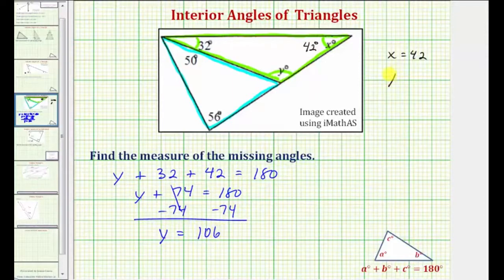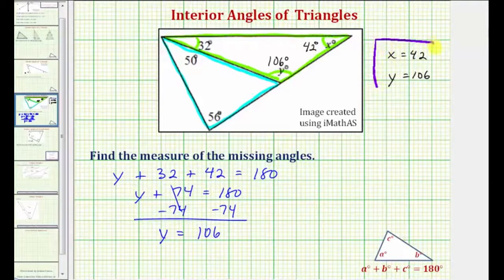So if y is equal to 106, we know the measure of this angle is 106 degrees. And notice the unit of degrees is already on x and y. So for our homework, we only enter x equals 42 and y equals 106.